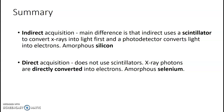Summary: Indirect uses a scintillator to convert x-rays into light, a photodetector converts light to electrons, and uses amorphous silicon. Direct has no scintillator — x-rays are directly converted into electrons — and uses amorphous selenium.